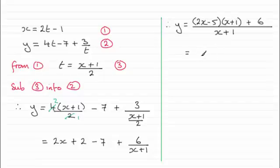So if we do that, we've got 2x times x which is 2x squared, and then you've got 2x times 1, that's 2x, minus 5x. That's going to leave me with minus 3x, and then you've got minus 5 times 1, that's minus 5, plus the 6, that's going to be plus 1. And that's all over x plus 1.